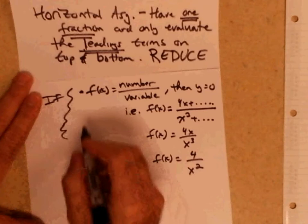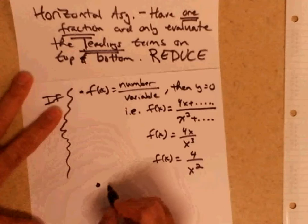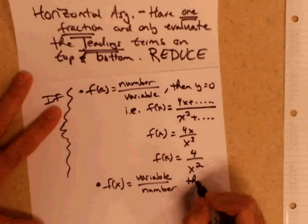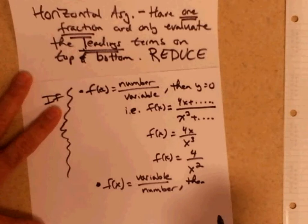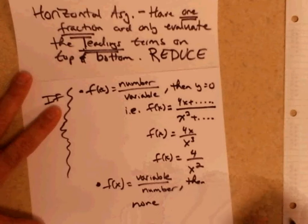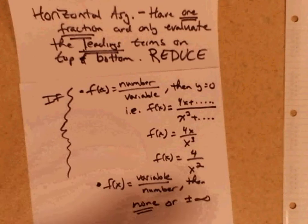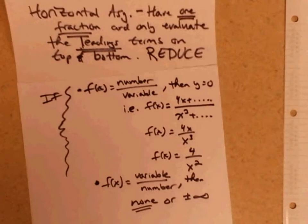That's the first condition. For the second condition, if it's the other way around — f(x) equals some variable over a number — then there is no horizontal asymptote. Sometimes they refer to it as going to plus and minus infinity, but basically there is none. So if it's the other way around, the graph shoots off into space and there's no horizontal asymptote.